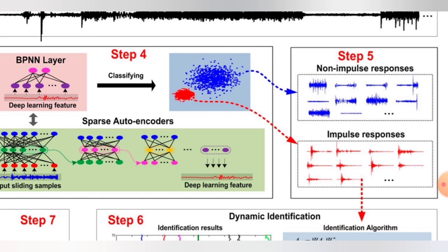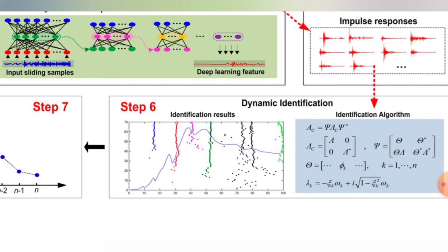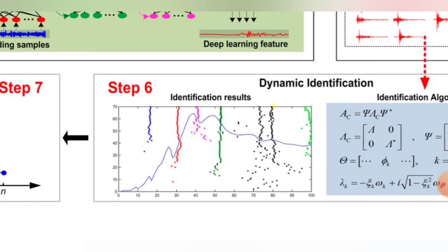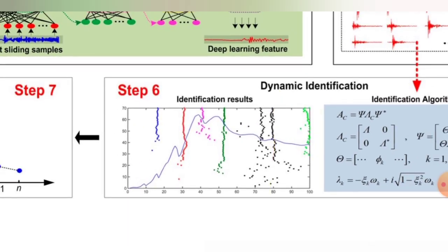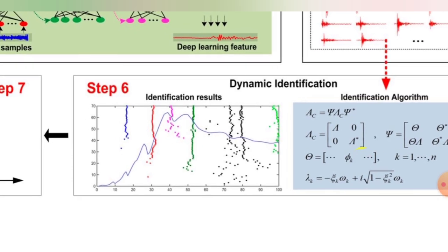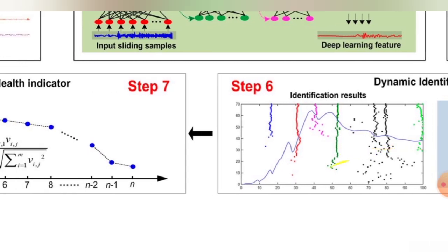After that, dynamic identification: we plot the identification results using identification algorithms. The identification results can be plotted here—this is dynamic identification, Step 6.